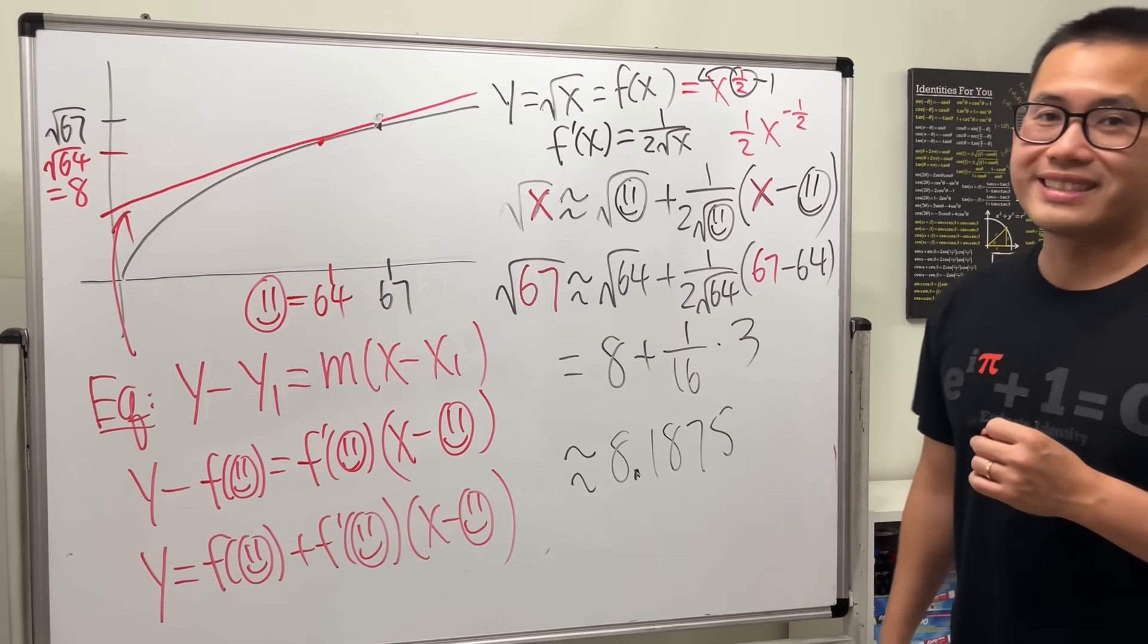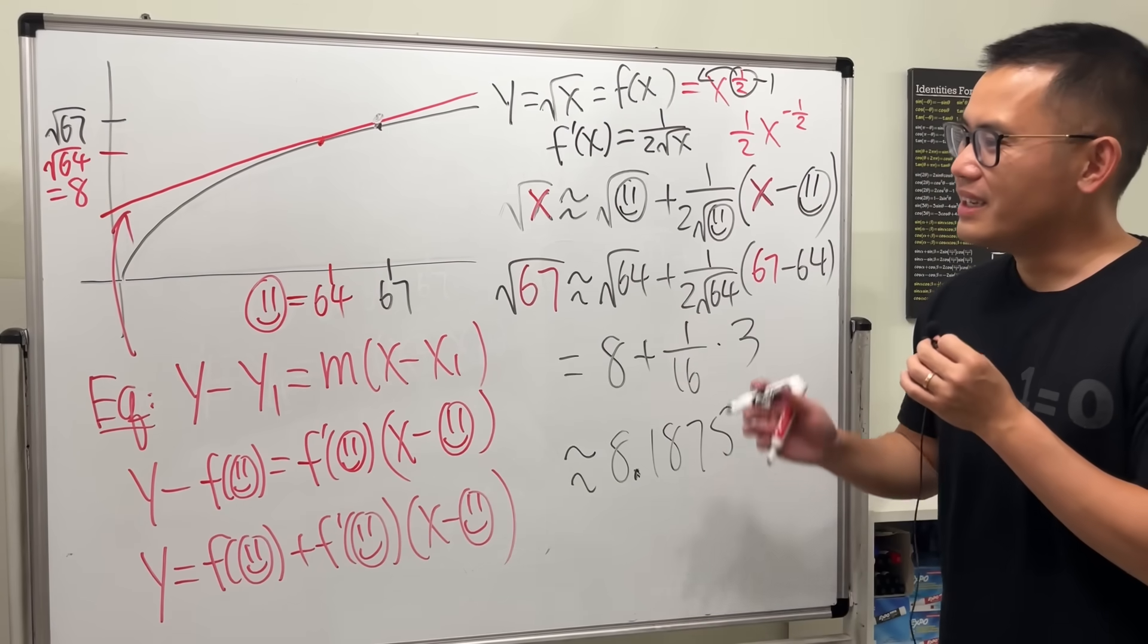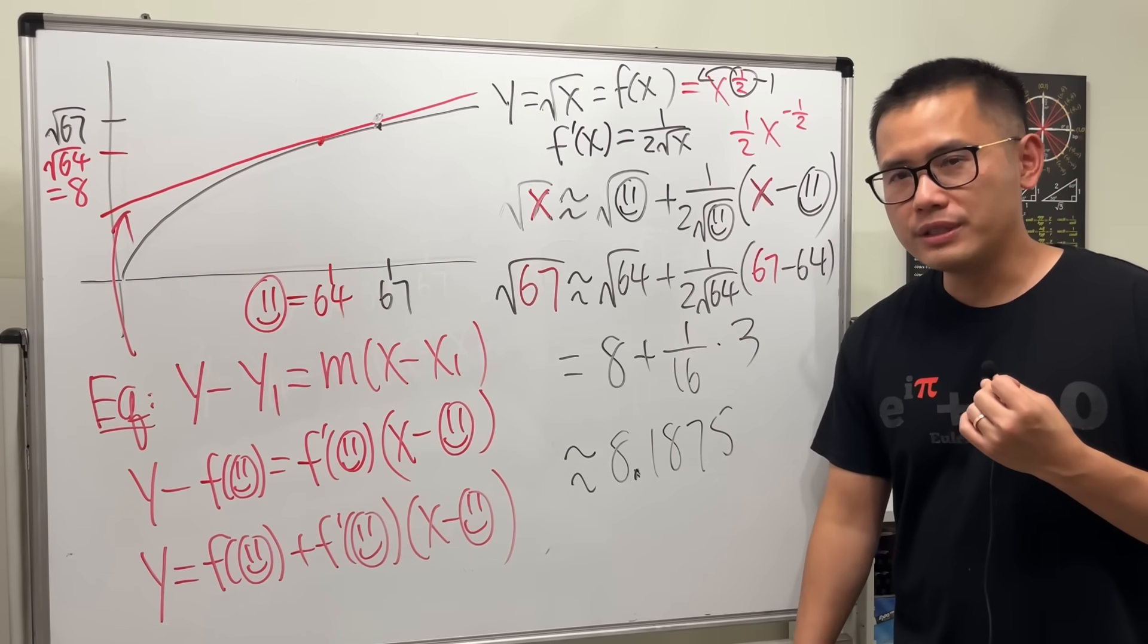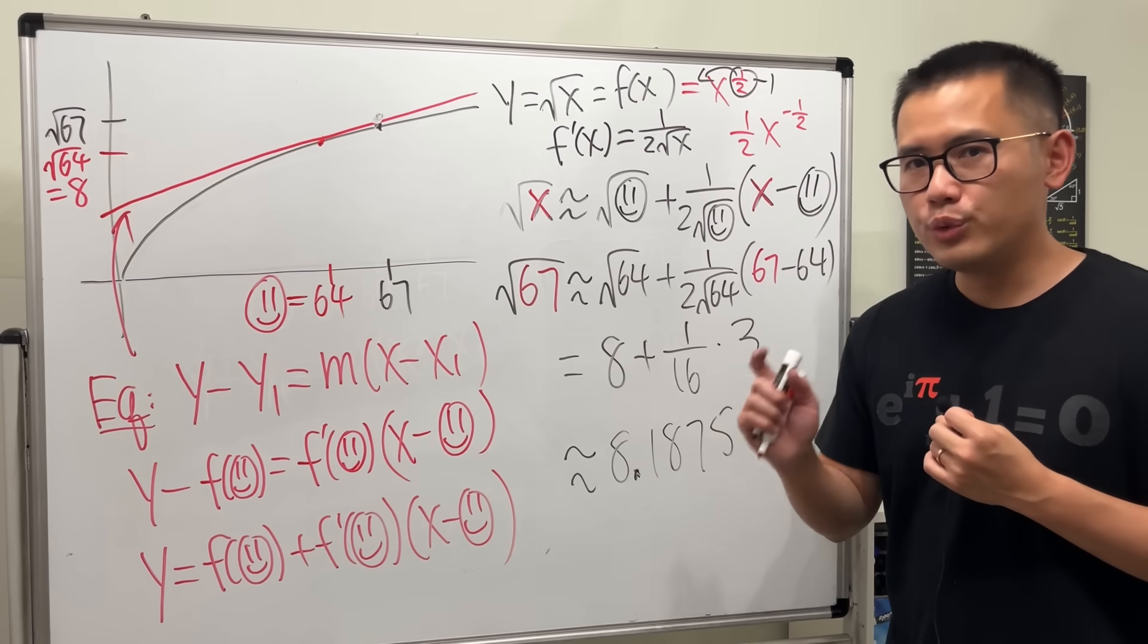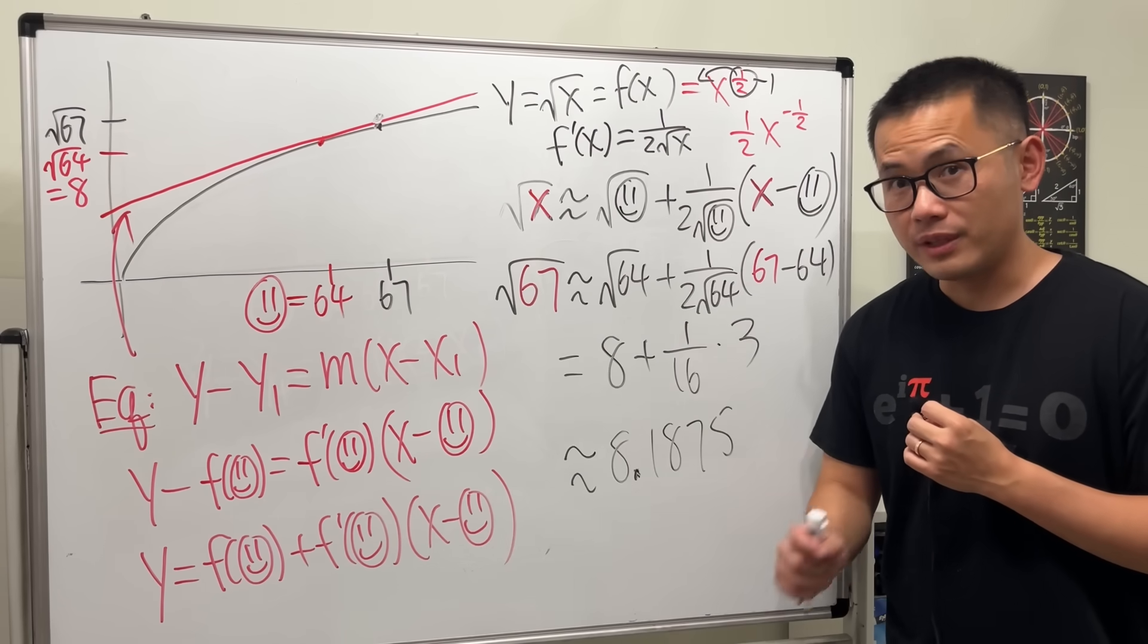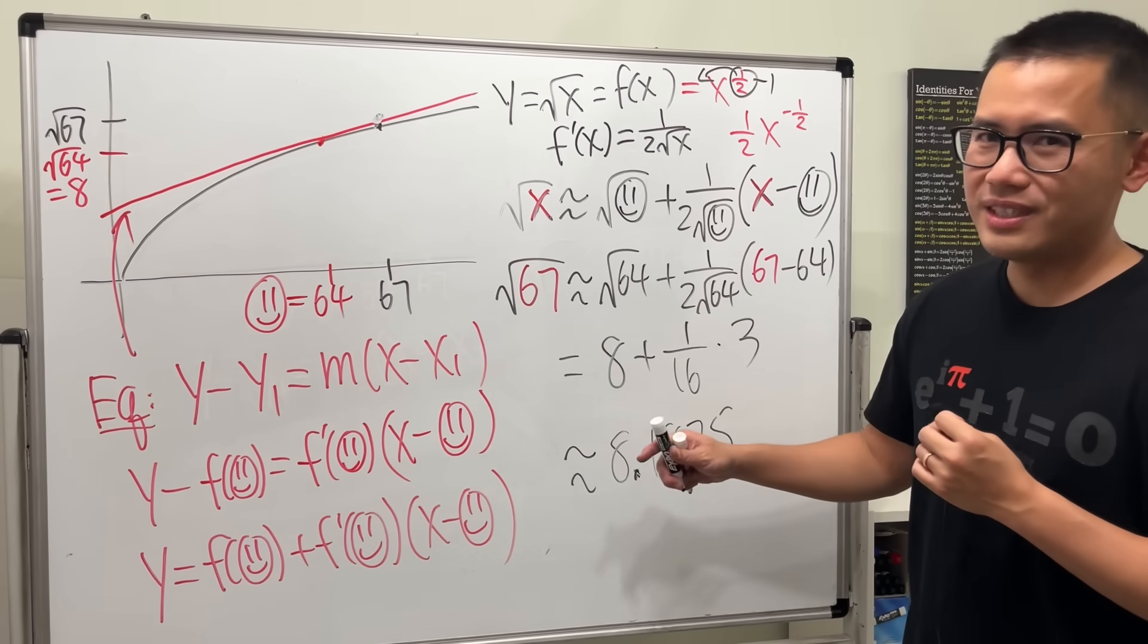So, just like this. Okay. So, one way to approximate square root numbers. And, of course, you can also use the Newton's method, but I think that might be for another video. Anyways, for this, that's it.